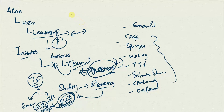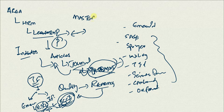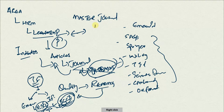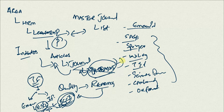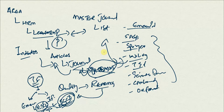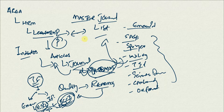To find out whether a journal has an impact factor or is emerging, we have the Master Journal List. All these databases have their journals indexed in the Master Journal List, so any journal in the list can be referred to as being of good quality.